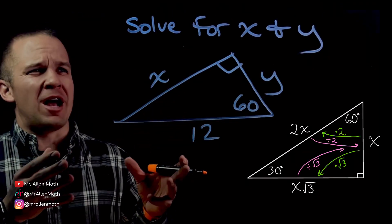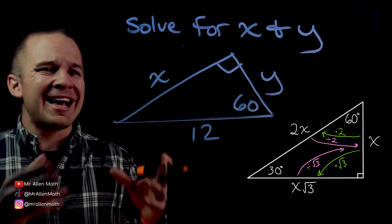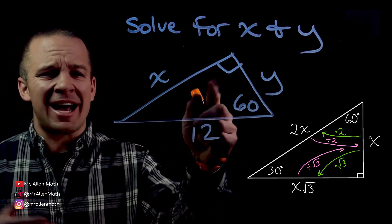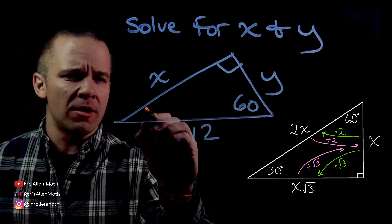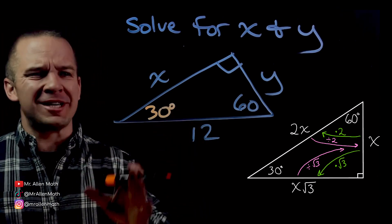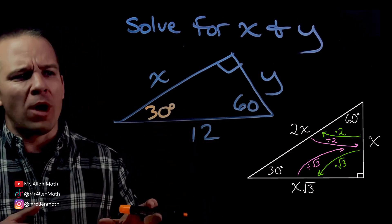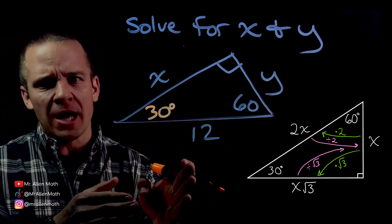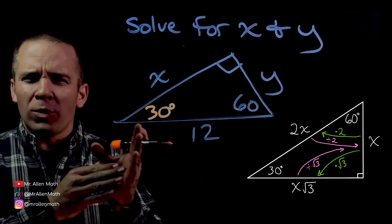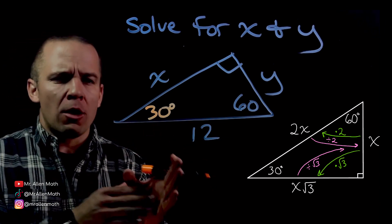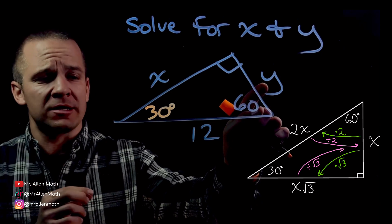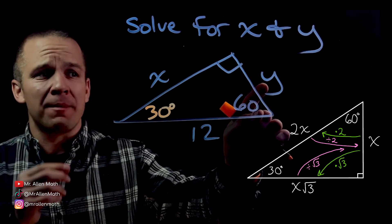I'm about to solve this triangle for X and Y. What kind of triangle is this? I've got a 60 and a 90 — what's left over? That's 30, so it's a 30-60-90. I've got my hypotenuse. I can get my short side, which is my Y, very easily by dividing by two.